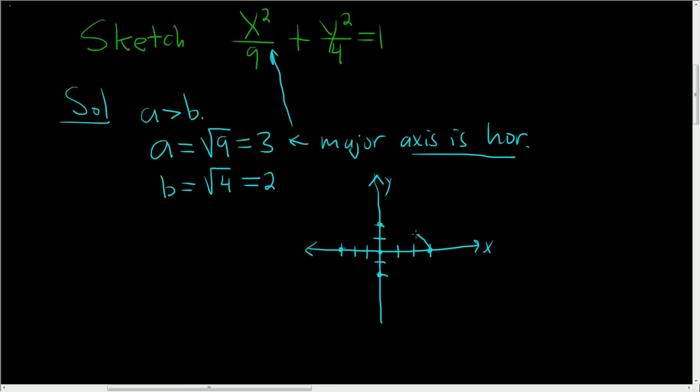And then attempt to draw what looks like an ellipse. And that is a thing of beauty. That's how you graph an ellipse with the major axis being horizontal.